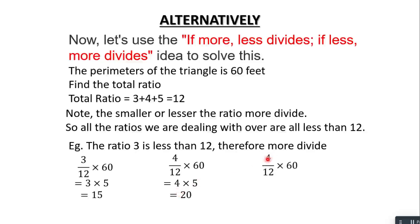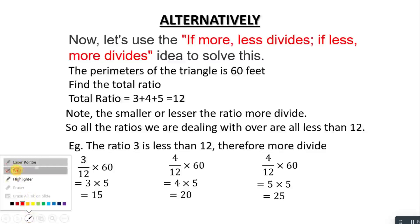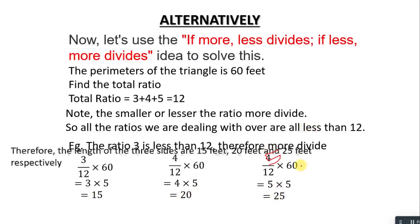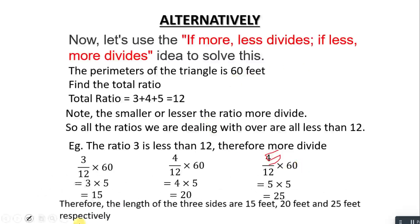So applying 'if less, more divide': all individual ratios are less than 12, so we divide by the larger total ratio. The results are 15, 20, and 25 — the respective side lengths. To verify, we sum them: 15 + 20 + 25 = 60 feet, which matches the given perimeter. Your answer is correct.